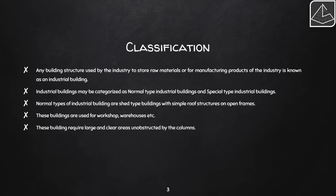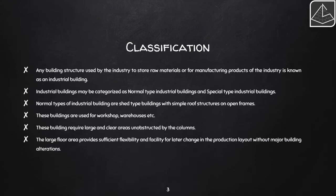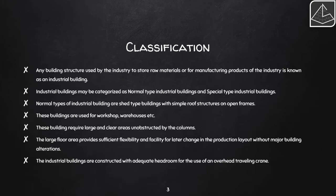These buildings require large, clear areas unobstructed by columns, unlike residential buildings. The large floor area provides sufficient flexibility for later changes in the production layout without major alterations. Industrial buildings are also constructed with adequate headroom for overhead traveling cranes, with headroom varying from 15 to 20 meters or more depending on the machinery and materials inside.